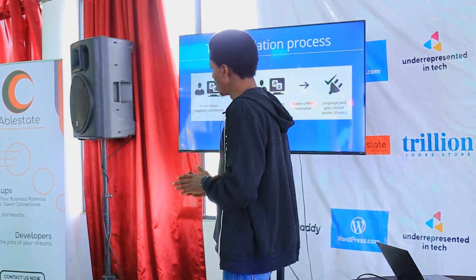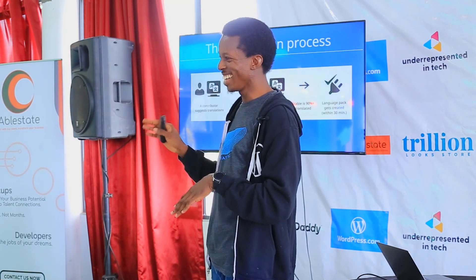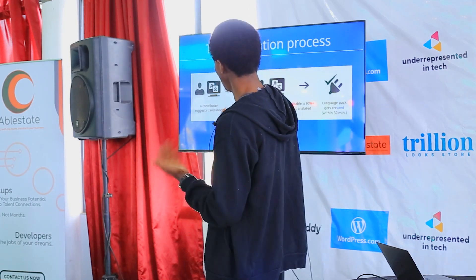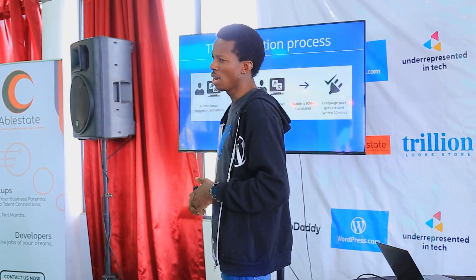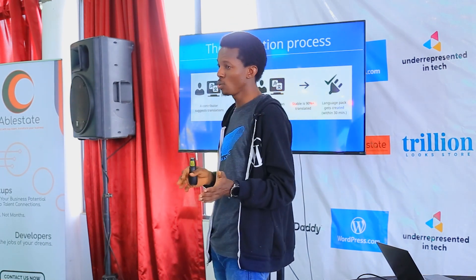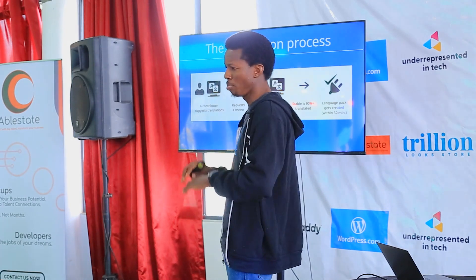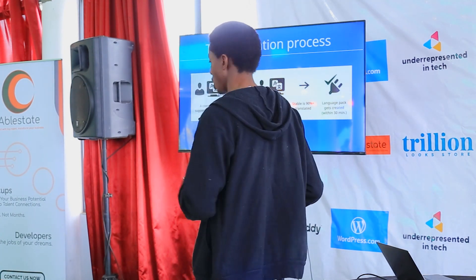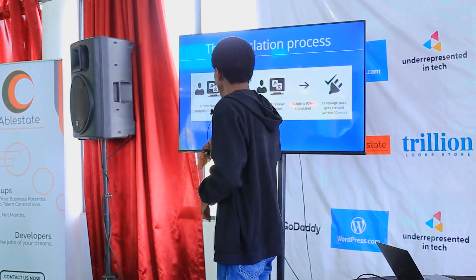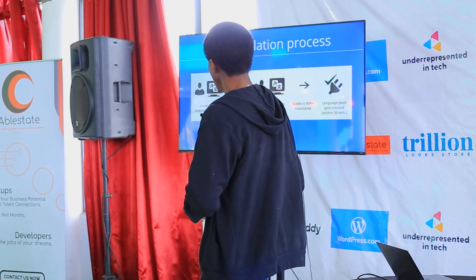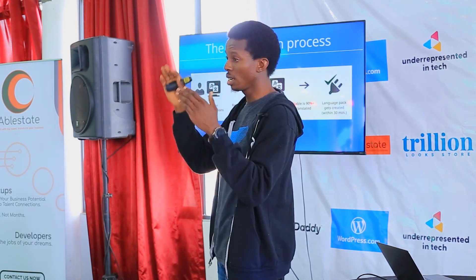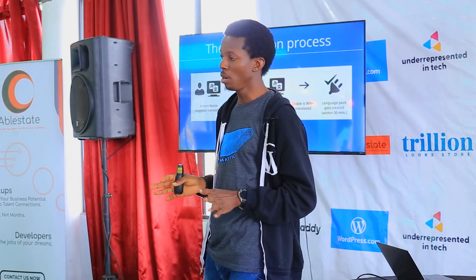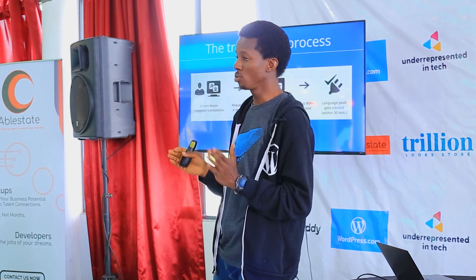Let me go through the translation process. If you want to translate WordPress core or a plugin into your local language, here's what you do: you sign up at translate.wordpress.org, you select the project you want to translate, and then you suggest a translation. Most projects are written in English and there's a space for you to add your own translation.